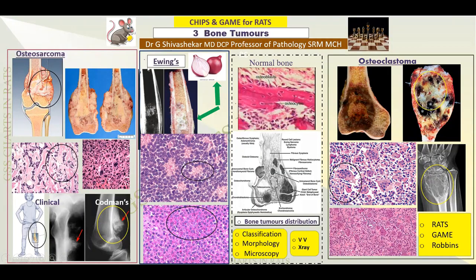Welcome, dear students. In today's class, we shall be dealing with three bone tumors. I have deliberately chosen these three: osteosarcoma, Ewing sarcoma, and osteoclastoma. Mainly, what we should have in mind is the gross picture, the microscopic picture, and the radiological picture for each of them. Additionally, we should keep a clinical picture in mind, as it is important for history and diagnosis.